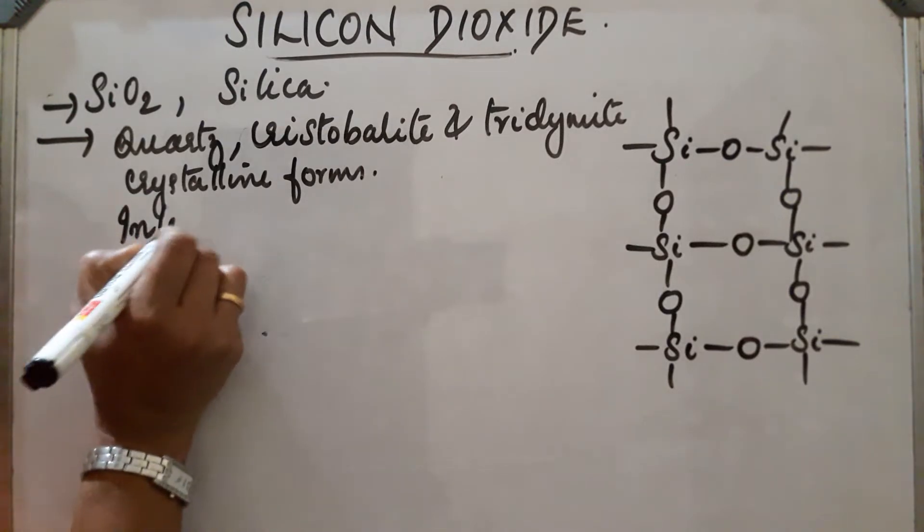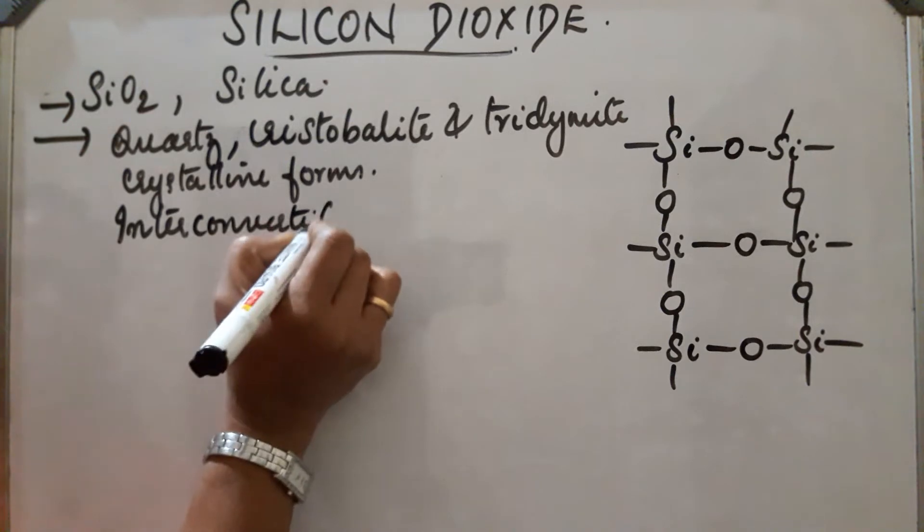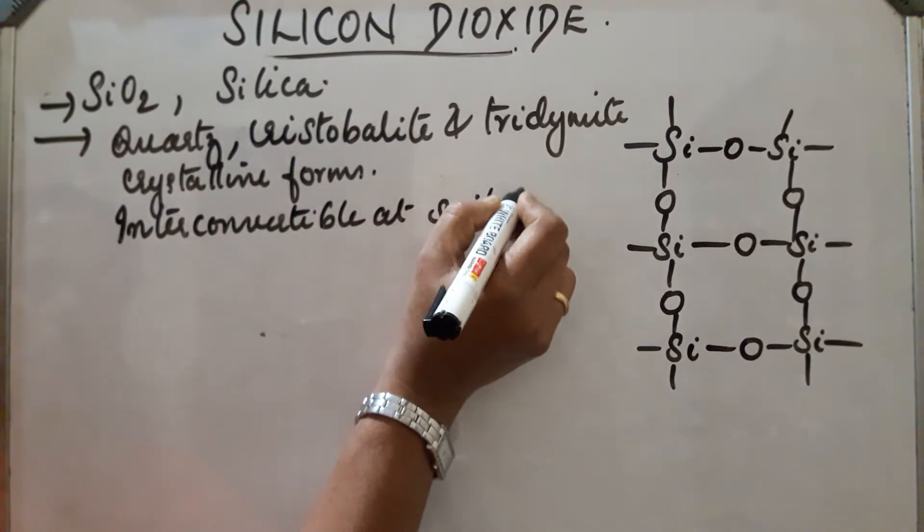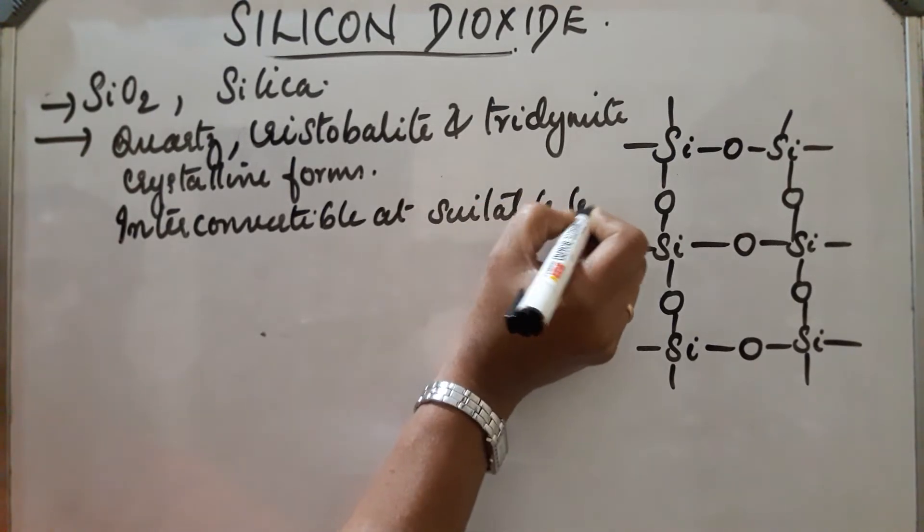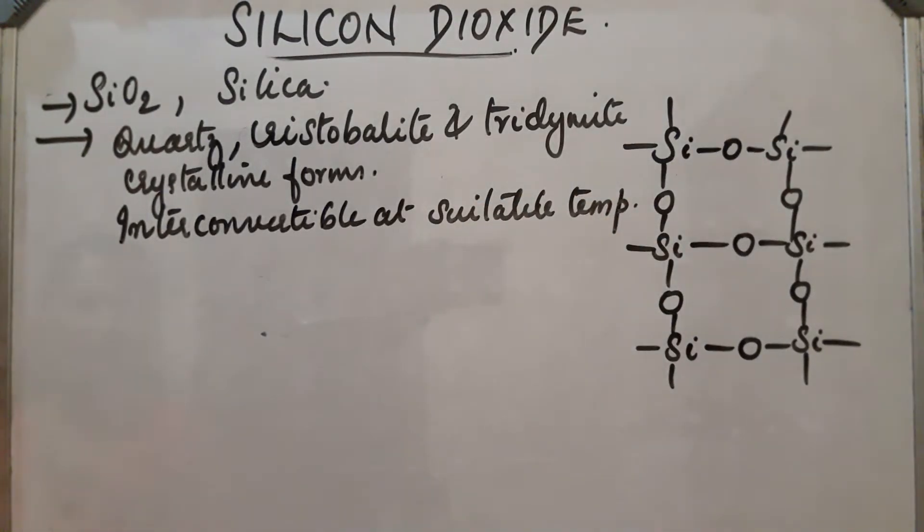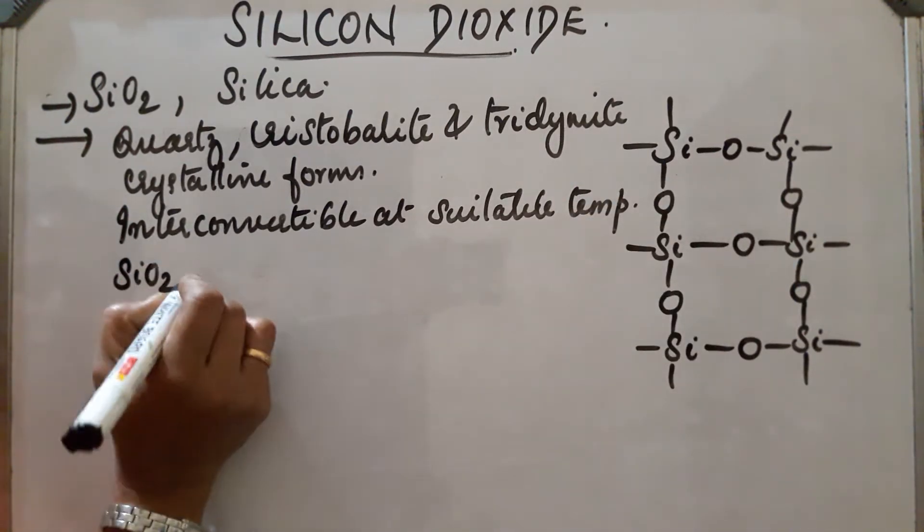They are interconvertible at suitable temperature. Next, silicon dioxide is covalent in nature. Silicon dioxide is covalent.